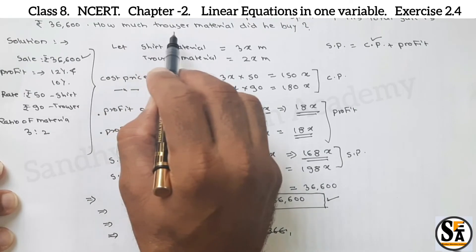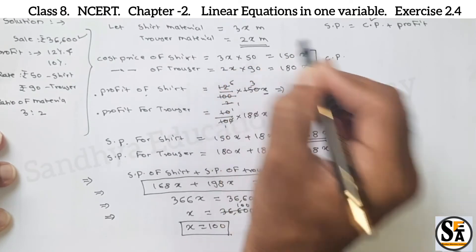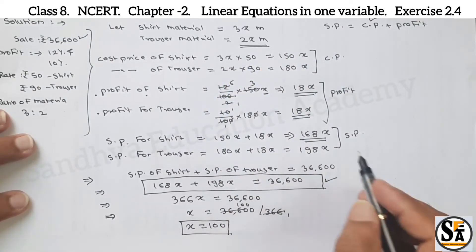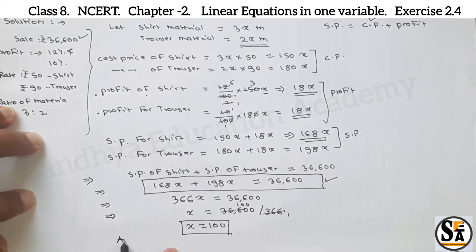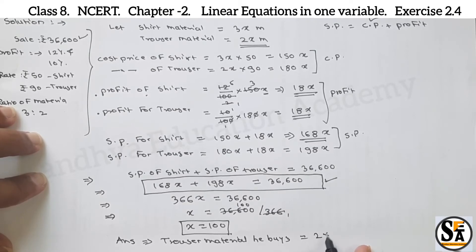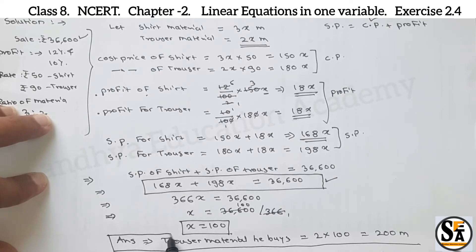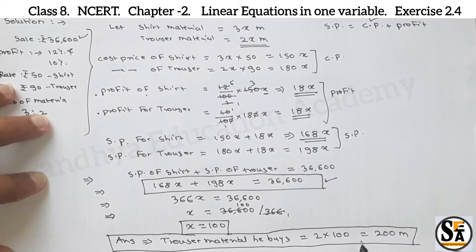What is asked in the question: how much trouser material did he buy? We have assumed trouser material as 2x meters. So our answer: trouser material he bought is equal to 2 into 100, which is 200 meters. This is our final answer. Trouser material he bought is equal to 200 meters.